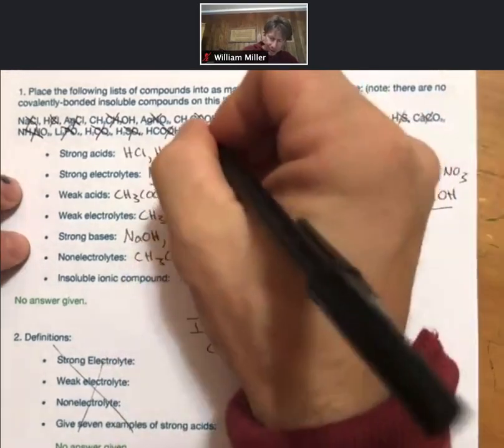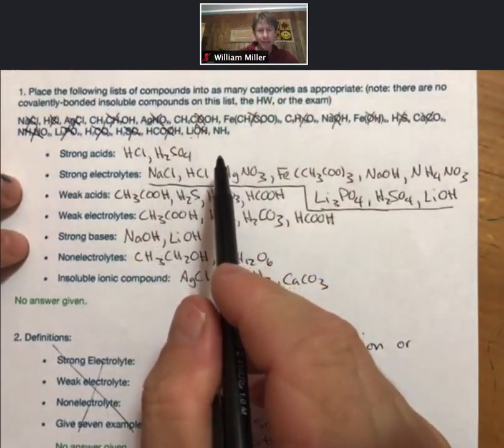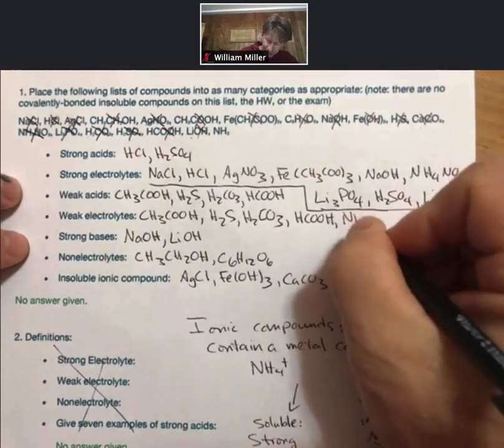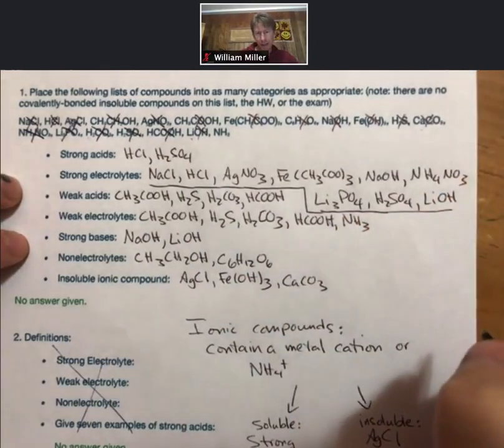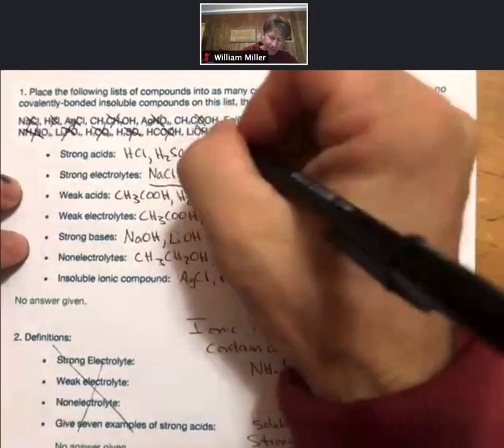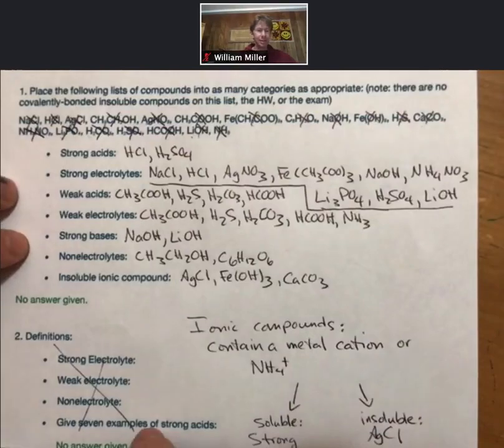I think that's the last one because ammonia is the only weak base that you have to know. There is no weak base category, but it is also a weak electrolyte. And that is how we classify all these compounds into their different categories, and a little bit of the thought process.